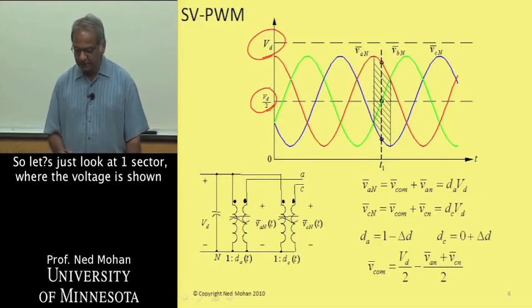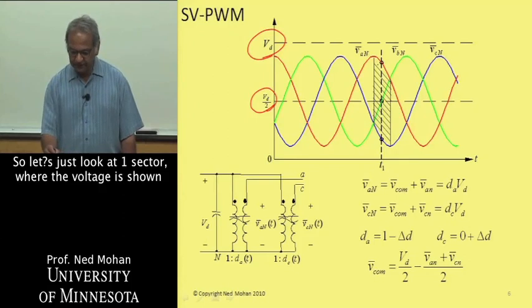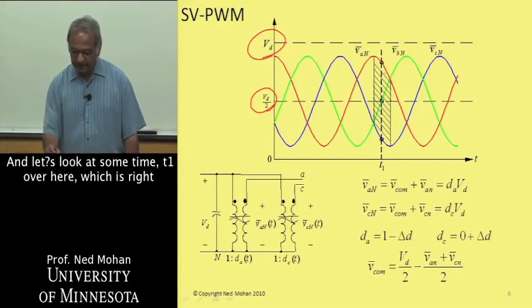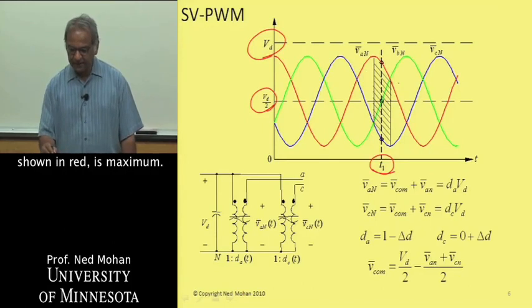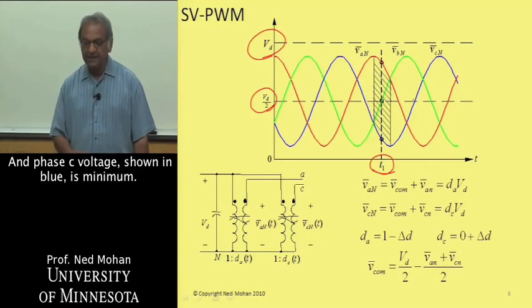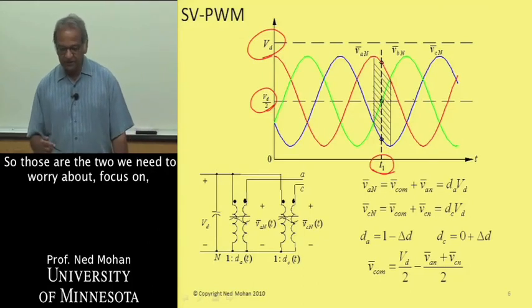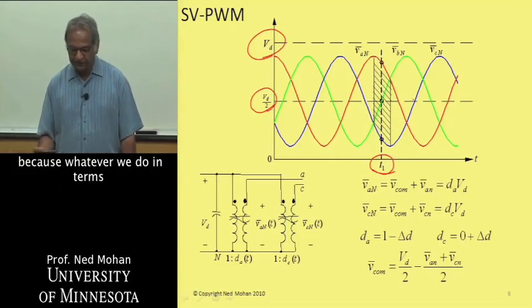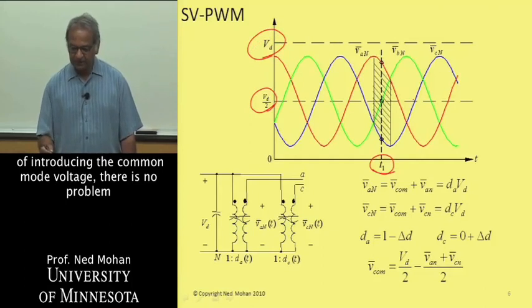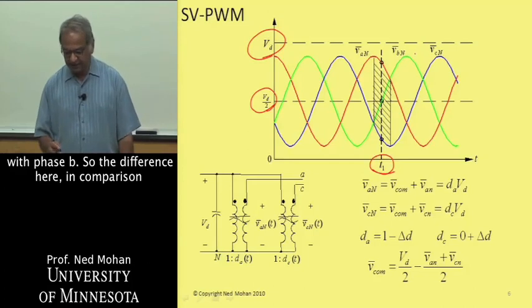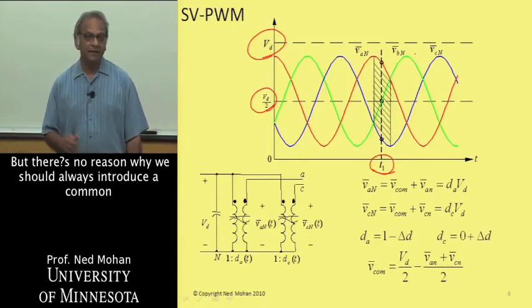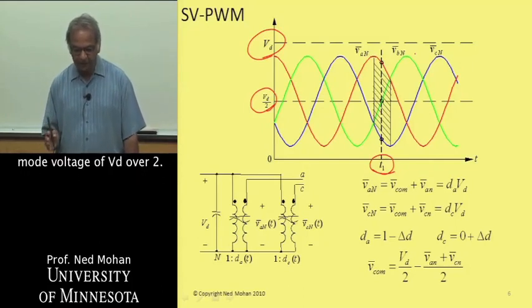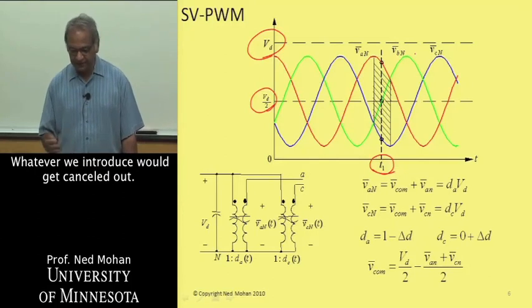Let's just look at one sector where the voltage is shown in this range over here. Let's look at some time T1 which is right in the middle of this sector. You can see that phase A voltage shown in red is maximum and phase C voltage shown in blue is minimum. So those are the two we need to focus on because whatever we do in terms of introducing the common mode voltage, there is no problem with phase B. The difference in comparison to sine PWM is that in sine PWM we were introducing a common mode voltage of VD/2. But there is no reason why we should always introduce a common mode voltage of VD/2. Whatever we introduce would get canceled out.